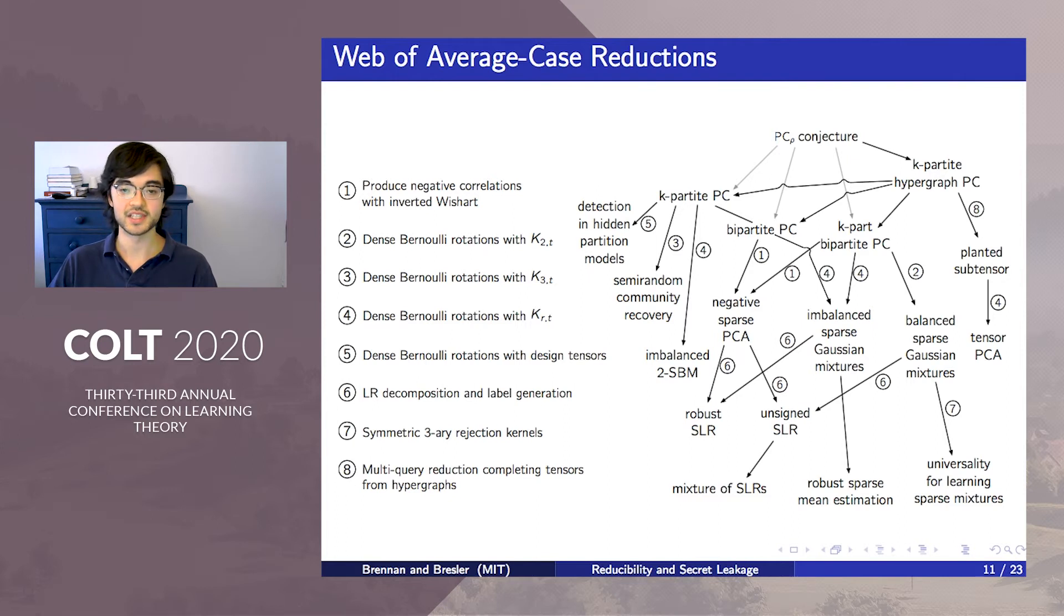This web depicts the average case reductions carried out in our work. The left column shows our main techniques. Near the top of the web are four specific instantiations of the PC-rho conjecture corresponding to various natural variants of PC. As shown, k-partite hypergraph PC is the strongest of these hardness assumptions, implying the other three.